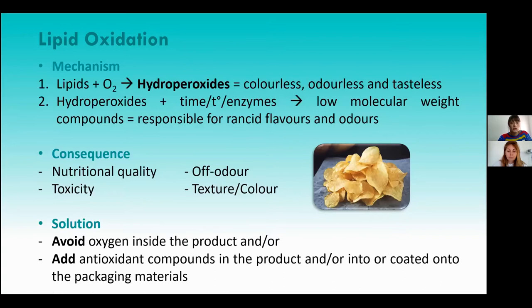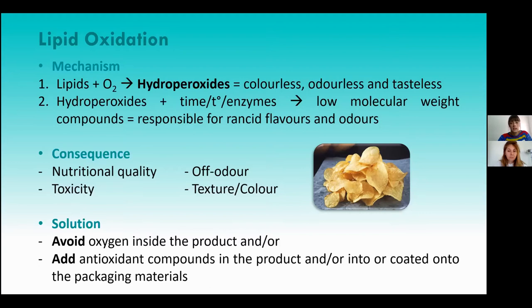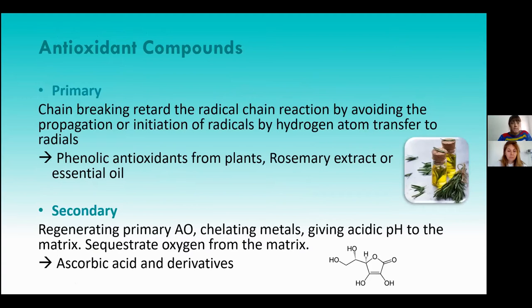In order to tackle this problem, we can work on two approaches: either by avoiding oxygen inside the product using oxygen absorbers, or by adding antioxidant compounds in the food product and/or into the packaging materials, or coated onto the packaging material, which is the active packaging strategy I will explain. We can find two different types of antioxidant compounds.